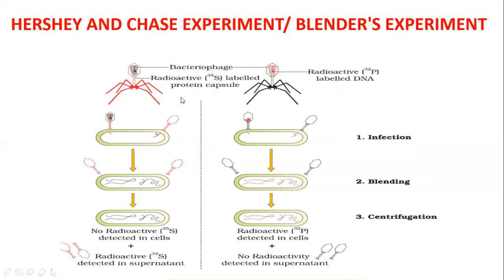Step one — infection: the viruses attach to the cell wall of bacteria and spread their tail like a syringe, injecting their genetic material (DNA) into the bacterial cell. Step two — blending: the test tube contents are agitated so that virus particles attached to the bacterial wall get separated. Only the DNA enters the bacteria; the rest — the viral coats — get separated after blending.